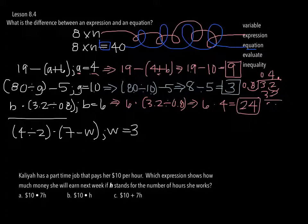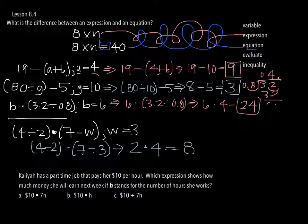Alright fifth graders, let's check and see how you did. First one, we have 4 divided by 2 times 7 less w, where w is equal to 3. So let's start working here. We've got 4 divided by 2 times 7 less w is 3, so let's plug that in. And that's going to be 4 divided by 2 is 2 times 7 less 3 is 4, 2 times 4, so our answer is 8.